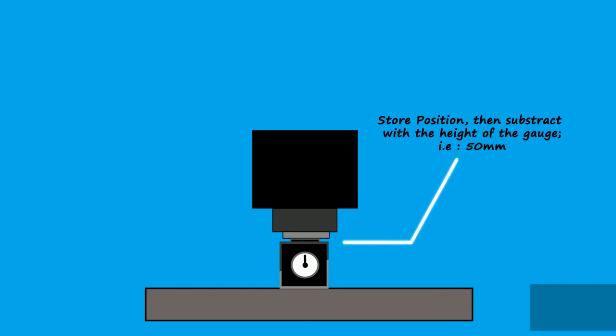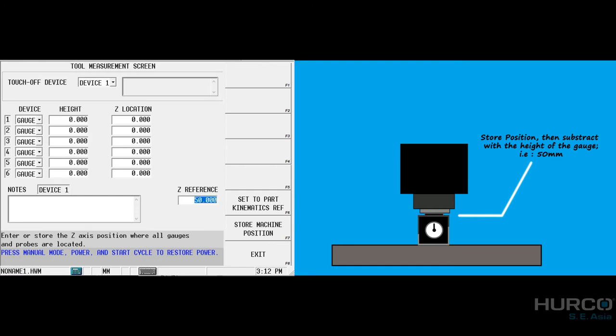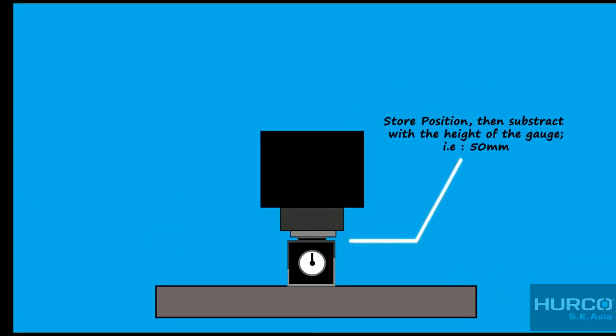Then, subtract the value with the height of the gauge by keying in the gauge's height and pressing the minus button, followed by Enter. By pressing the Enter button in the control, you will get the Z-reference value stored in the parameter automatically.